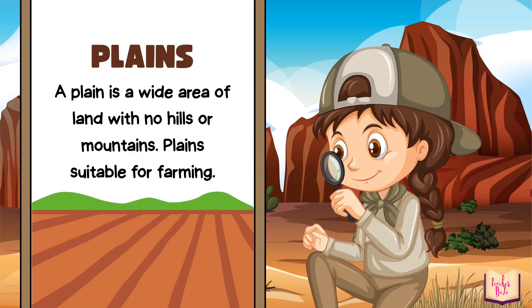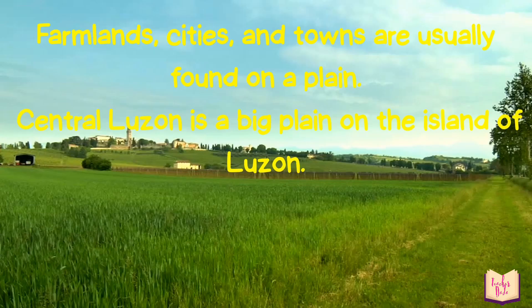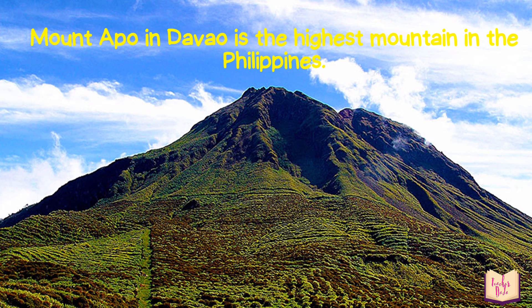The first one is plain. A plain is a wide area of land with no hills or mountains. Plains are suitable for farming. Farmlands, cities, and towns are usually found on a plain. Our Central Luzon is a big plain on the island of Luzon. Mountain is a landform that rises high above its surroundings and usually has steep slopes. Mount Apo in Davao is the highest mountain in the Philippines.